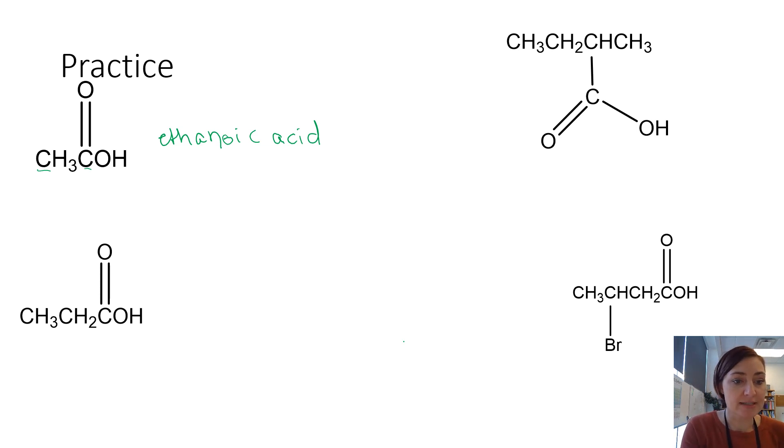In our next example, we have 1, 2, 3 carbons in our longest chain that have the carboxyl group and no branches. So we're going to start with the parent alkane name, which would be propane, and I'm going to drop the E and replace it with oic acid. So a 3-carbon carboxylic acid is propanoic acid.